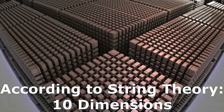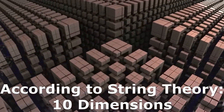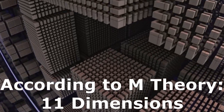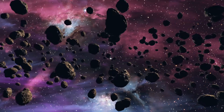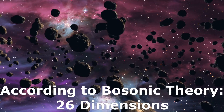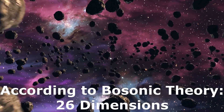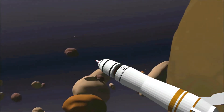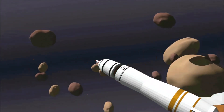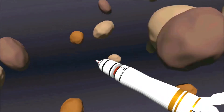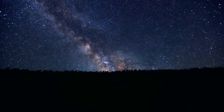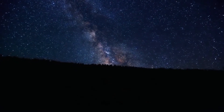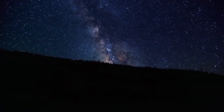According to string theory, there are 10 dimensions, while M-theory says that there are a total of 11 dimensions. But according to bosonic theory, the total number of dimensions may be up to 26. Scientists say that because of self-consistency, a universe cannot have more than 11 dimensions, as they become unstable. Because of this instability, they collapse back down into 11 or 10 dimensions.